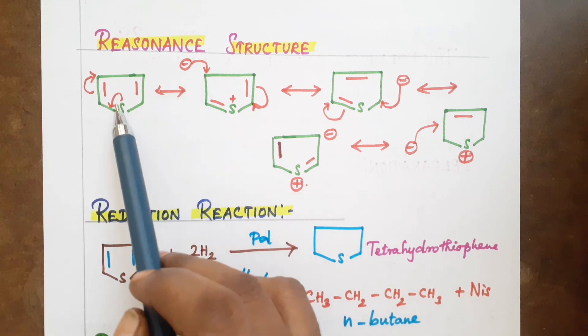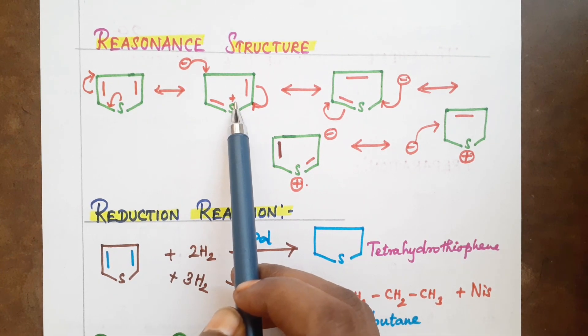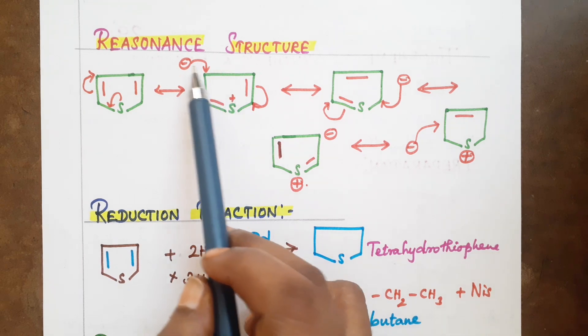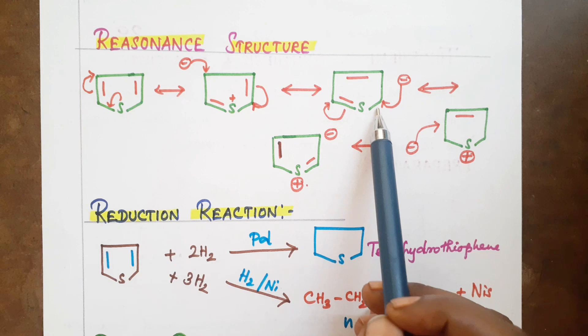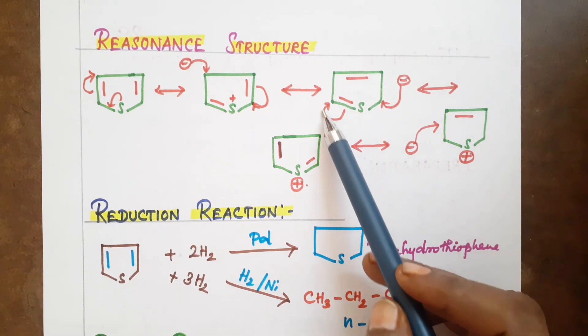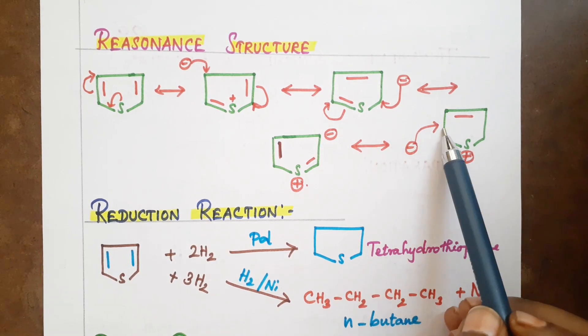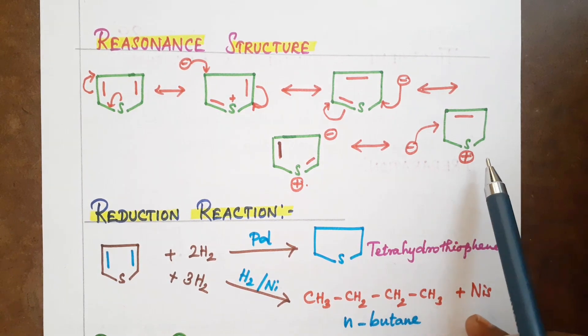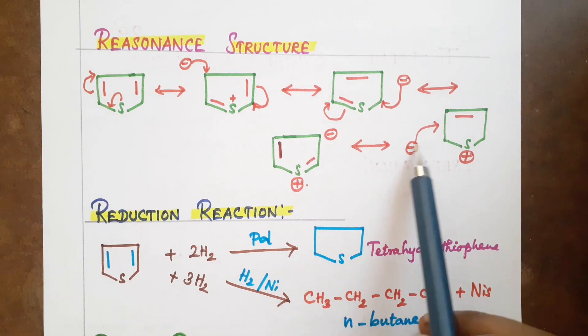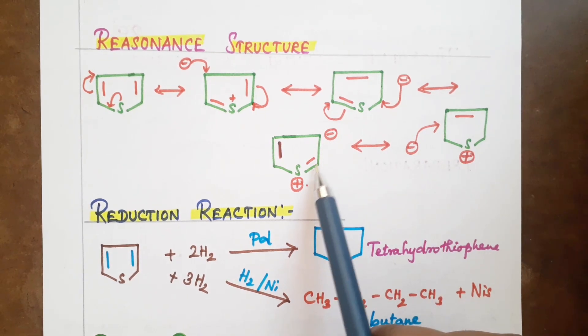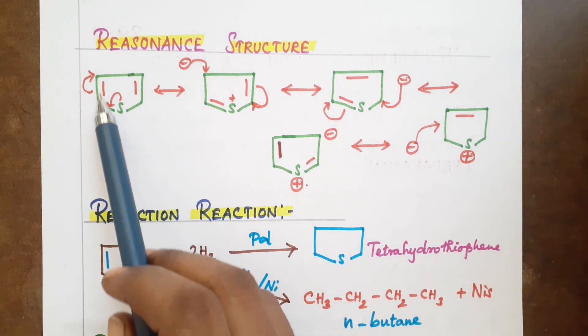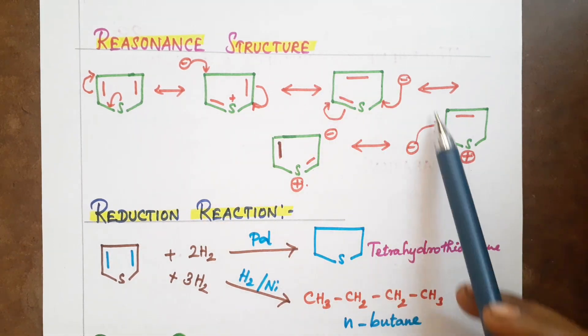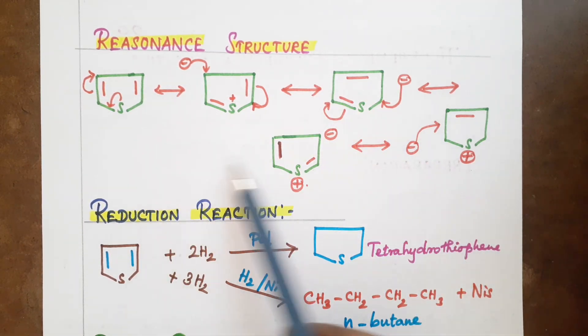We are going to discuss the resonance structures. We have the positive charge and negative charge. When we look at the bonds, this is the negative charge, this is the positive charge. The bond is shifting. The double bond is forming on the ring. We are seeing the resonating structures.